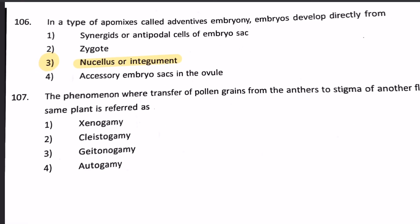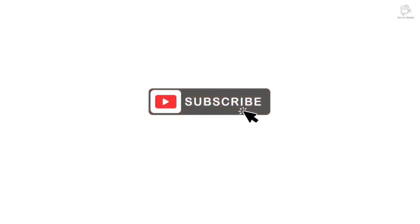The phenomenon where transfer of pollen grains occurs from the anthers to the stigma of another flower of the same plant is referred to as: 1. Xenogamy, 2. Cleistogamy, 3. Geitonogamy, 4. Autogamy. Geitonogamy is when pollen grains are transferred from the anthers to the stigma of another flower of the same plant. Hence our answer is number 3. Hope you liked our video — please comment and subscribe for more such videos.